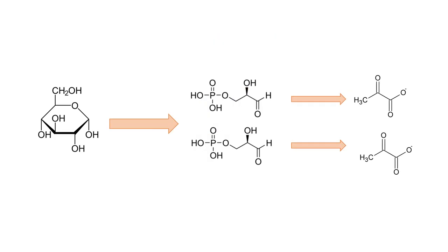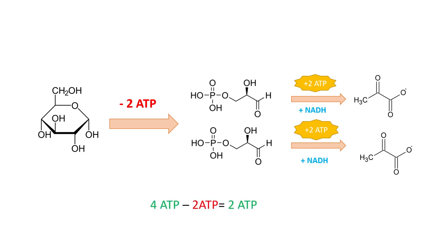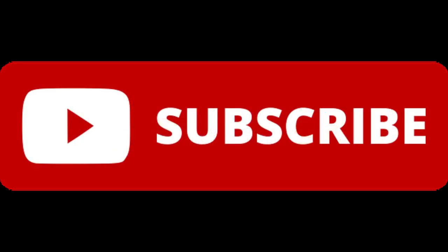In summary: in the first 5 steps of glycolysis we spend 2 ATP molecules, then in the next 5 steps we gain 4 ATP molecules, so in total glycolysis produces 2 ATP, 2 NADH, and 2 pyruvate molecules. Although 2 ATP does not seem like much, most of the energy is stored inside the pyruvate. Thank you for watching this video.